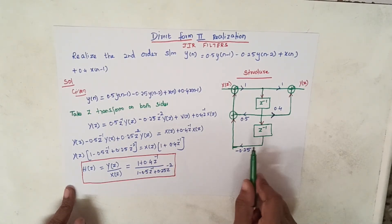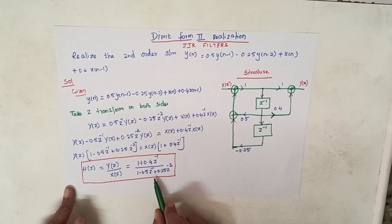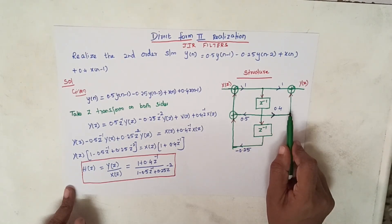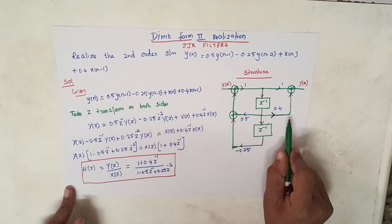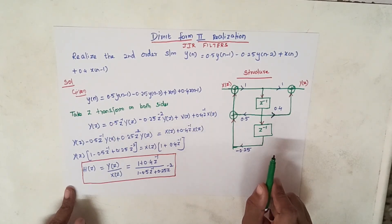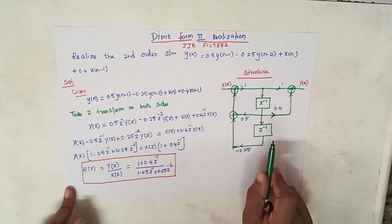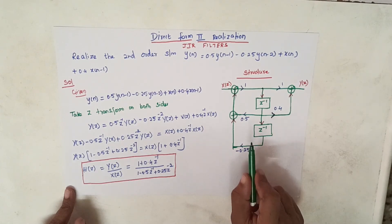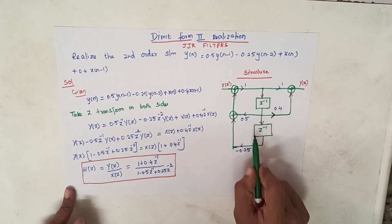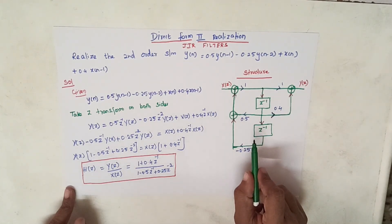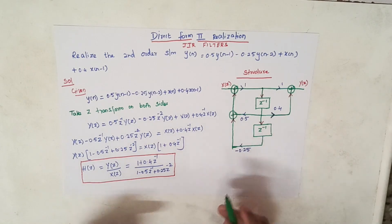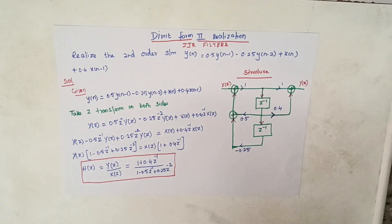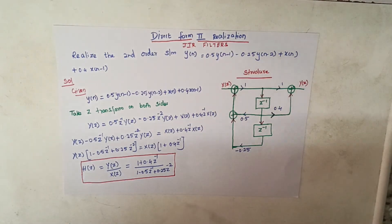This way, you can draw the Direct Form 2 realization structure simply and directly from the available transfer function. Only for the input side terms do we change the sign of the coefficients; output terms are represented as-is. The main advantage of the Direct Form 2 structure is that it reduces the number of delay elements compared to the Direct Form 1 structure. Thank you.